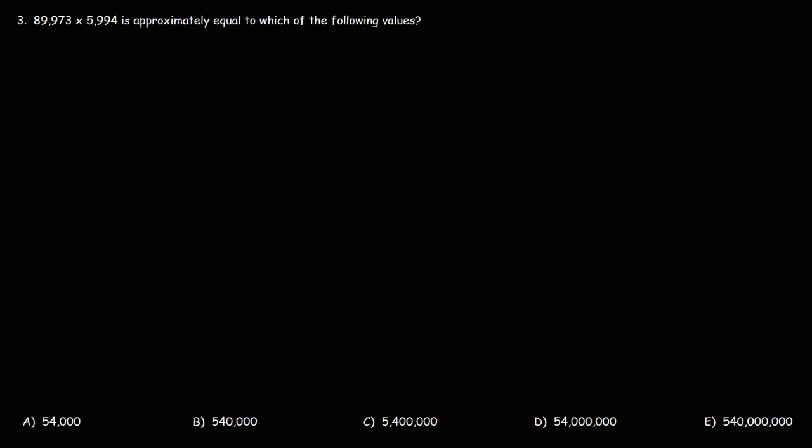Now, let's try the next example. 89,973 times 5,994 is approximately equal to which of the following values? So, go ahead and try that one as well.